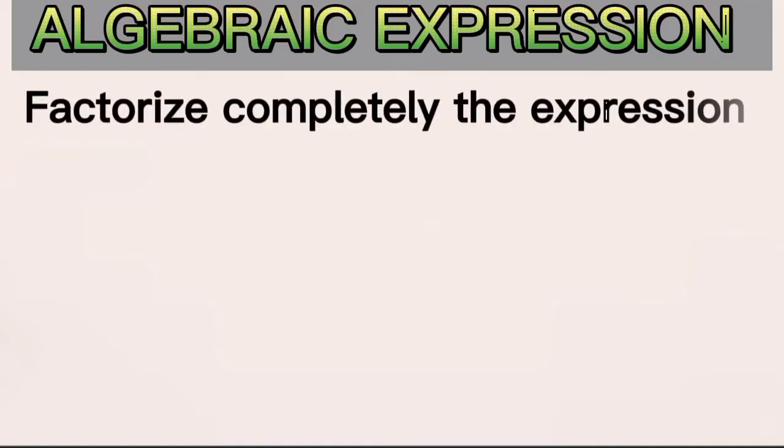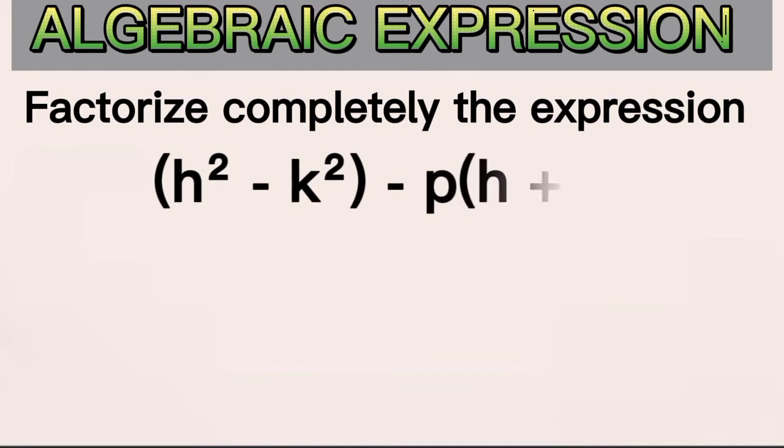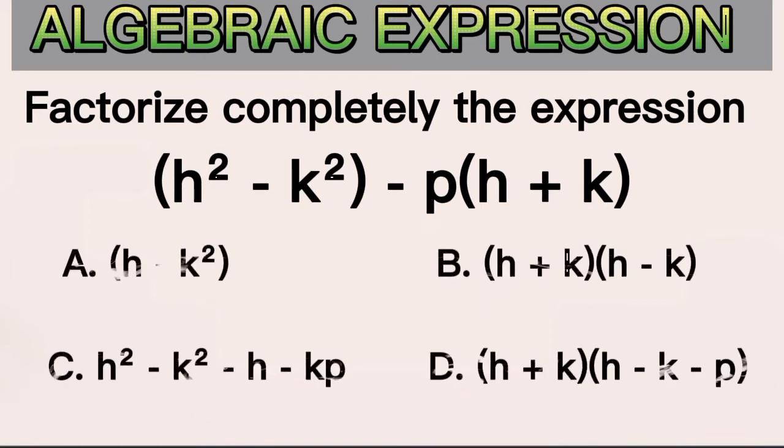Factorize completely the expression h square minus k square in a bracket minus p into a bracket h plus k bracket closed. And the options that we are having here are: A is h minus k all square, B is h plus k in a bracket multiplying h minus k also in a bracket, C is h square minus k square minus h minus kp, and the last one D is h plus k in a bracket multiplying h minus k minus p in a bracket. So which of them do you think is the correct answer?